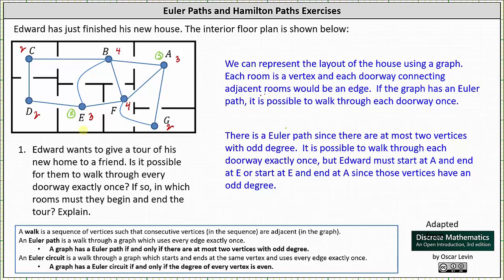Here's one possible Euler path or one possible tour. This is just one of many Euler paths of the graph, but each Euler path does have to start at A and end at E, or start at E and end at A. I hope you found this helpful.